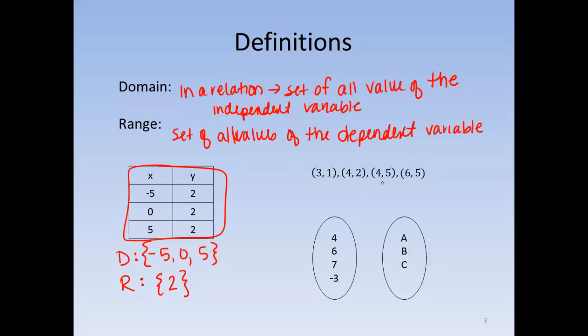For our set of ordered pairs, this relation here, the (3,1), (4,2), (4,5), and (6,5). We would say our domain is 3, 4, and 6, all of our X's, and our range is 1, 2, and 5.